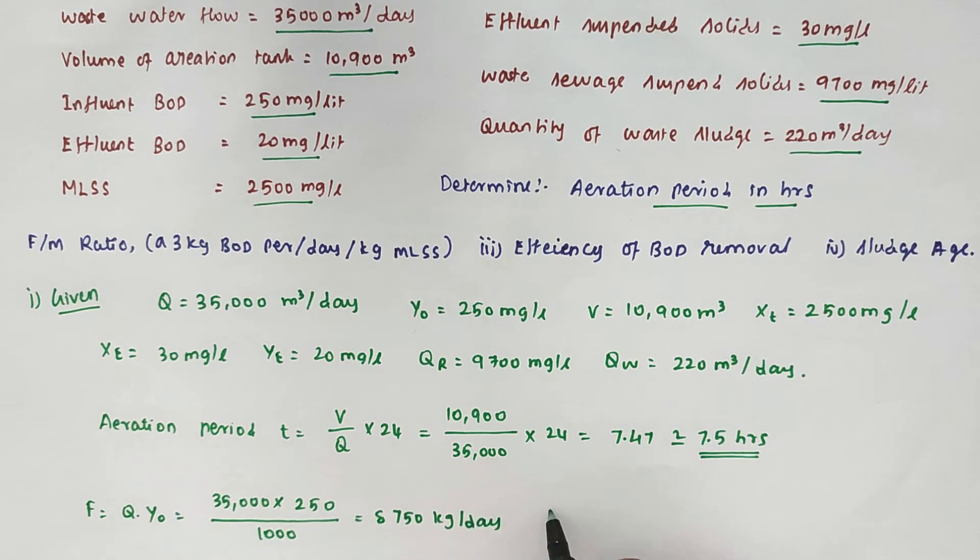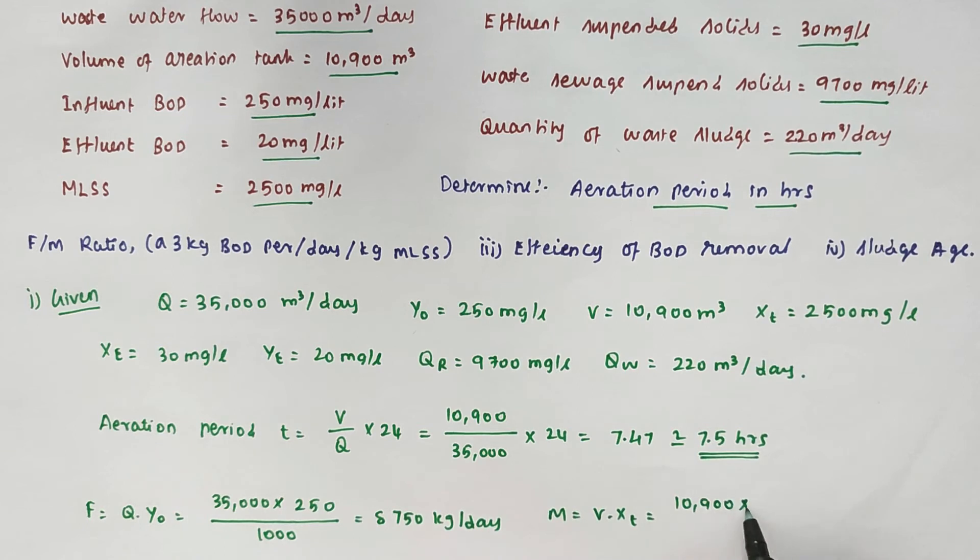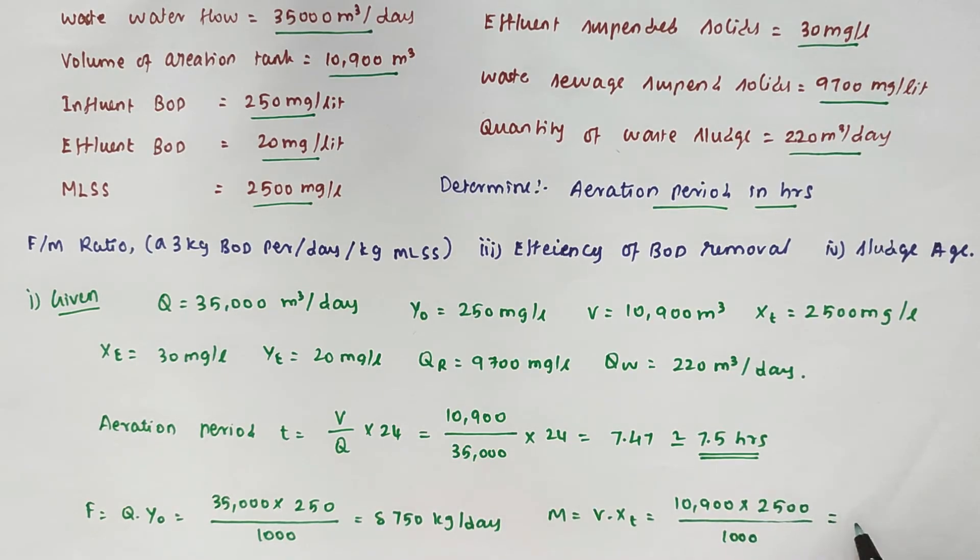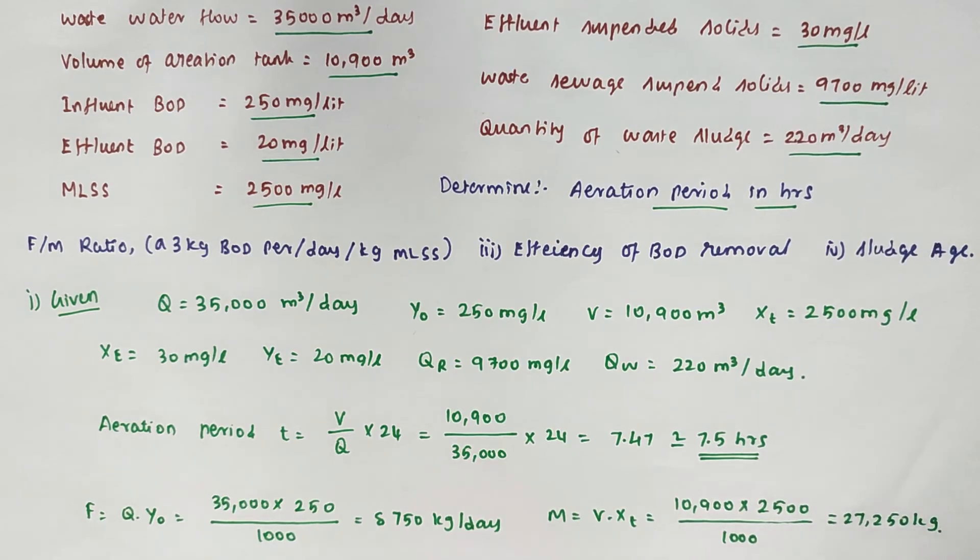Likewise, we can calculate the M value. M equals V times XT, that is 10,900 times 2500 divided by 1000 to convert into kg, equals 27,250 kg. Now we can easily find out the food by microbial ratio, that is F by M ratio.